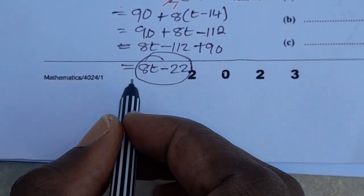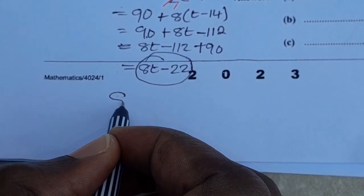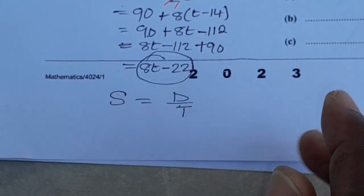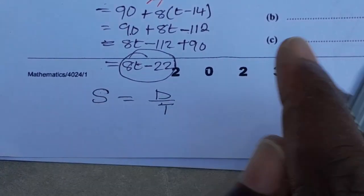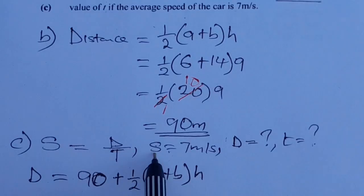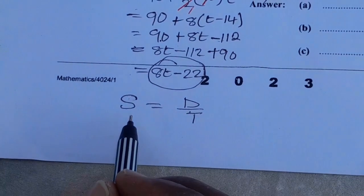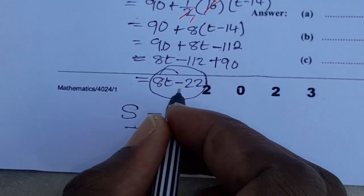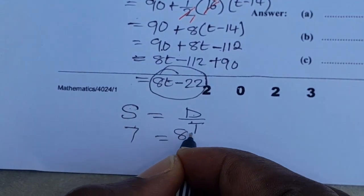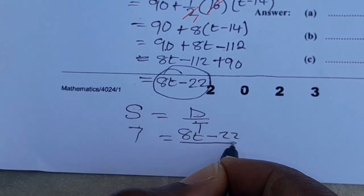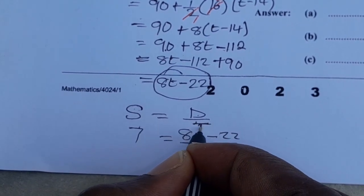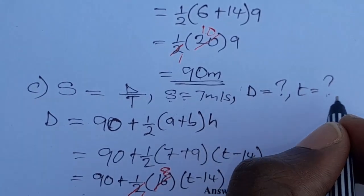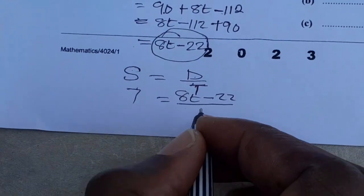Now to find the value of T, we use the formula: speed equals distance over time. Speed is given as 7 meters per second, so 7 equals (8T minus 22) over T, where T is the time we are looking for.